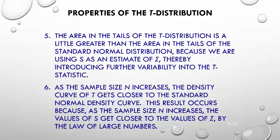As the sample size n increases, the density curve of t gets closer and closer to the normal density curve — it looks more and more normal. As n increases, the values of s get closer to the values of sigma, by the law of large numbers. And as s gets closer to sigma, the curve looks more and more normal.